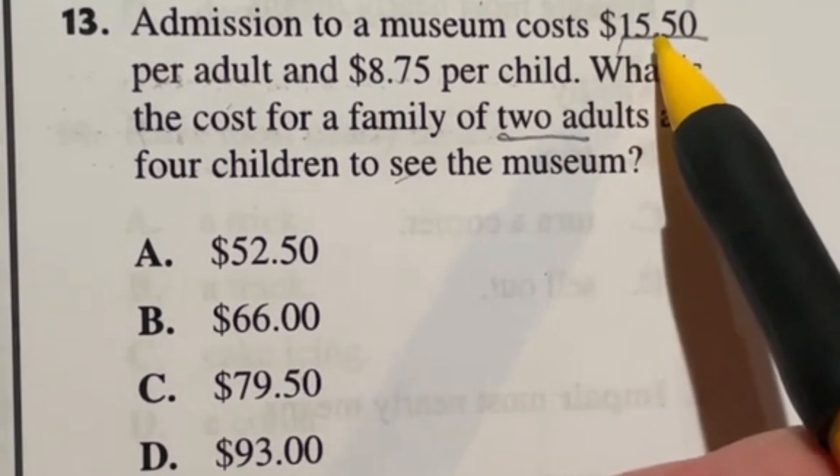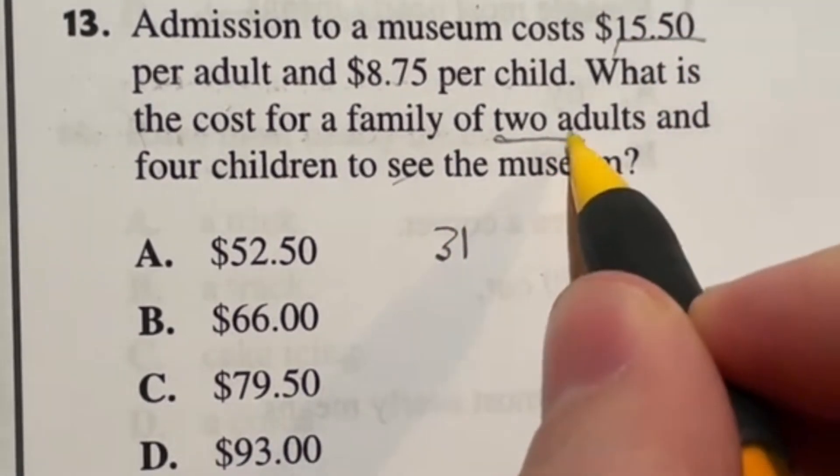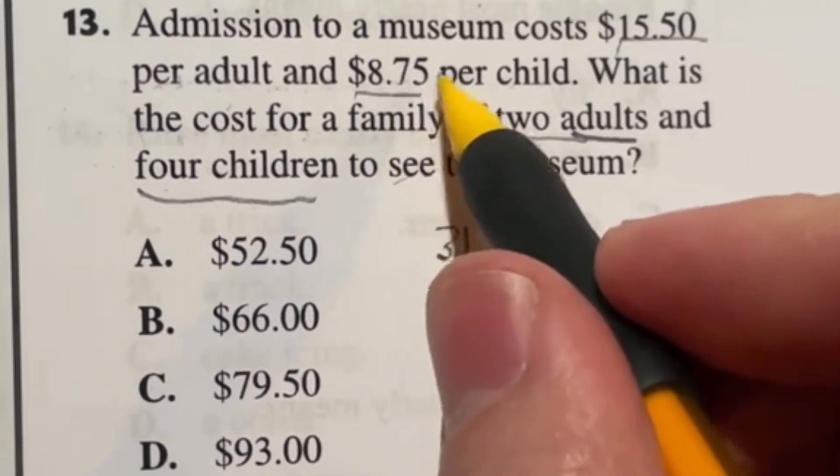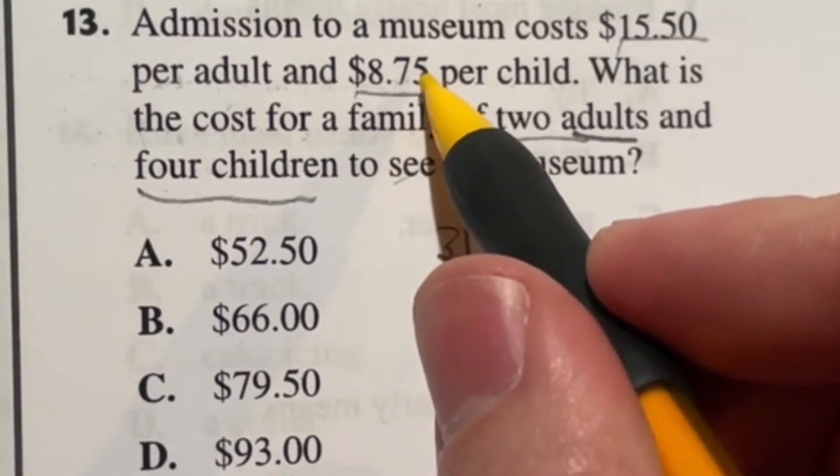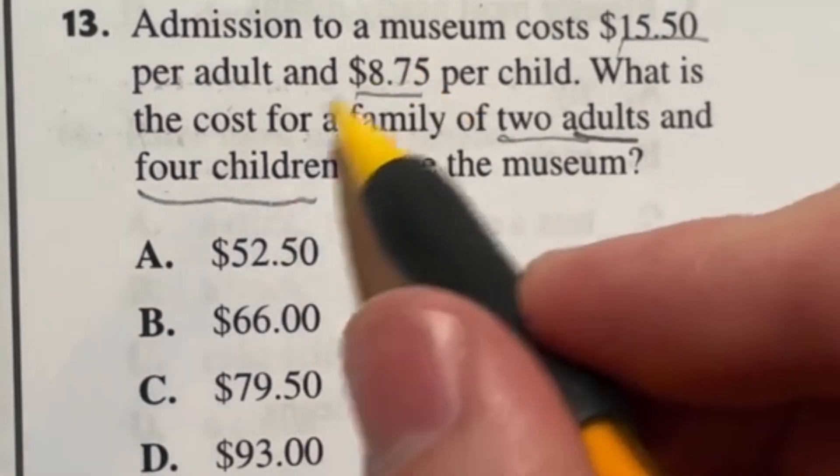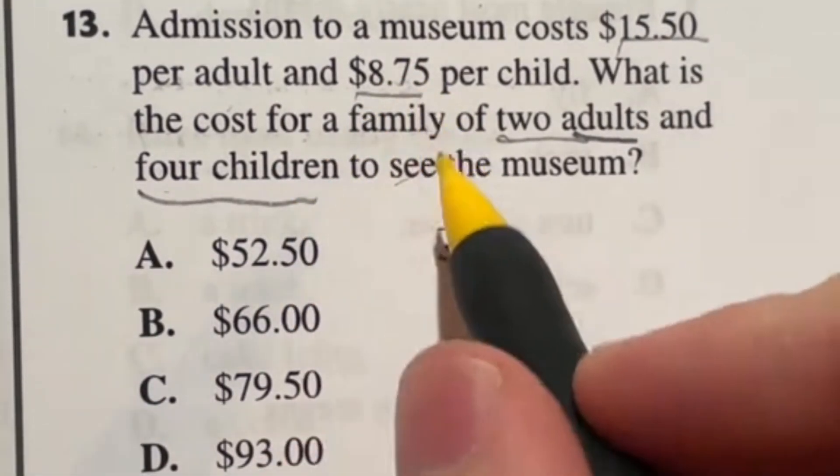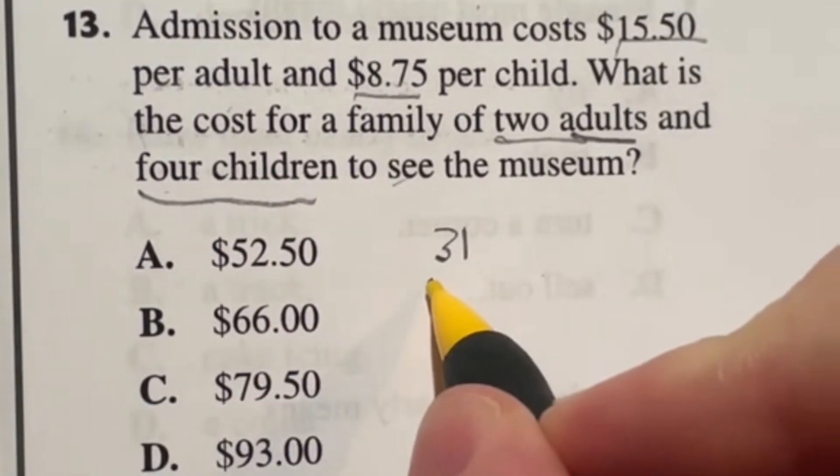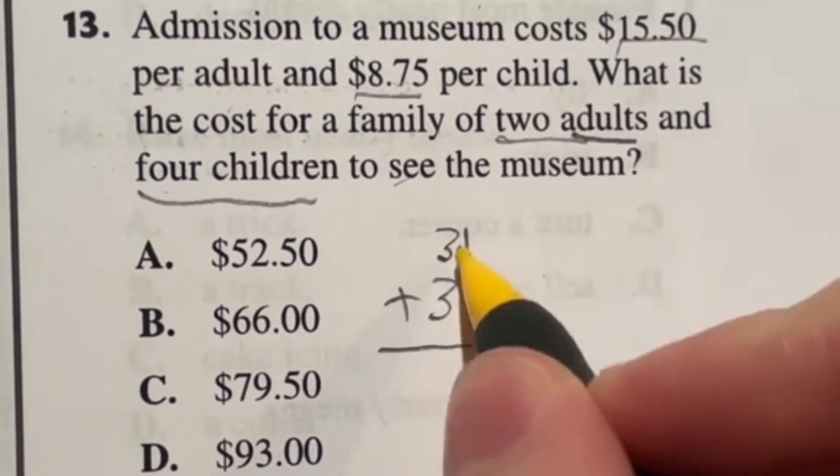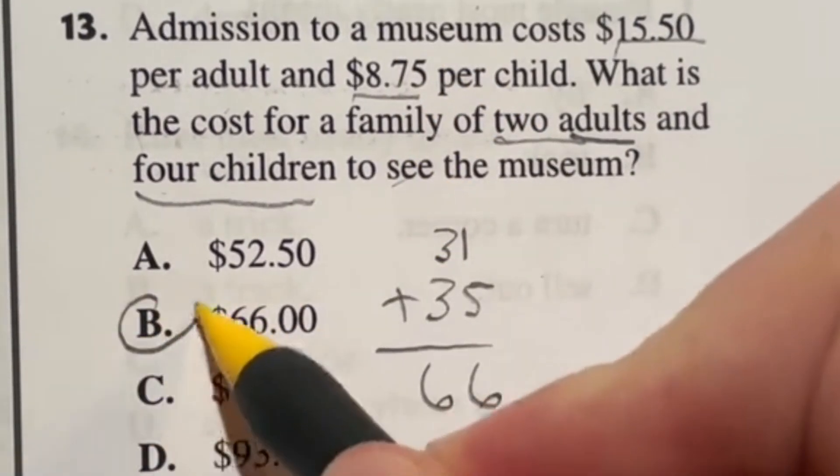15 times 2 is 30 and if I have 50 cents twice that's $1. So 30 plus $1 gives me a total of $31 for the two adults. Now we have the four children which are $8.75 each. Since it's $8.75 each that's essentially $9 and then we subtract 25 cents from each kid at the end. Since there's four of them, 4 times 25 is a dollar. So I'm going to do 9 times 4 to give me 36 and then subtract that one dollar. Nine times four is 36 minus one gives me 35. So the total price is the adults and the kids together, 31 plus 35 which gives me $66. The total price for this family is $66.